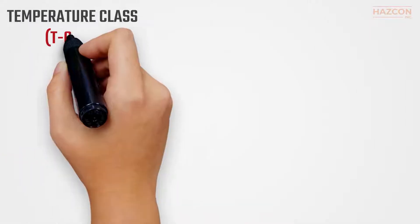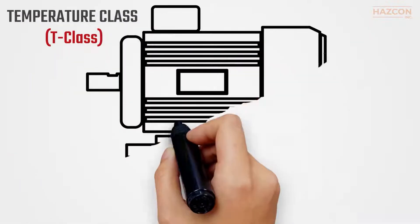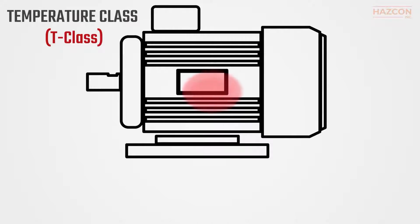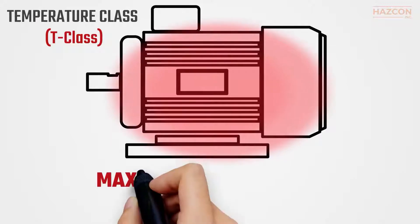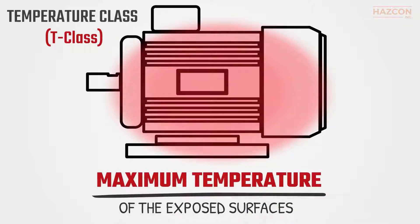Temperature class, known as T-class, is one of the characteristics used to classify an electrical device so it may be safely installed in a hazardous location. It is the maximum temperature of the exposed surface of the electrical apparatus, based on the ambient temperature range allocated for that device.